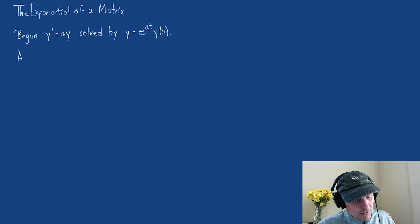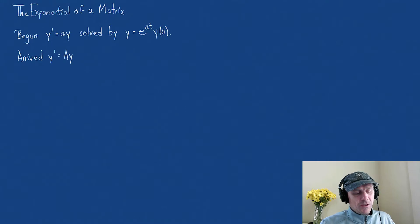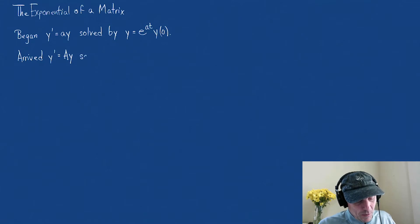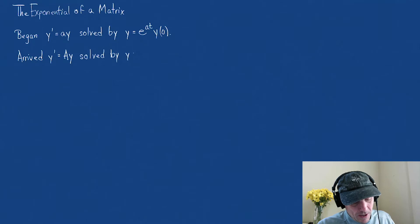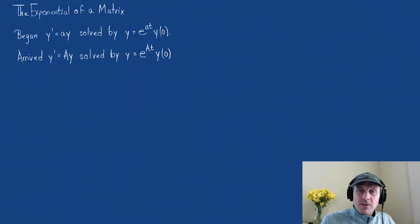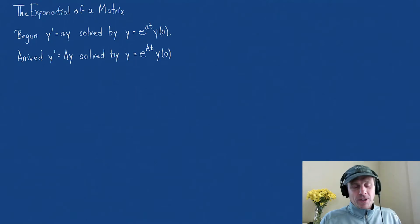Well, here's where we are now — where we have arrived. We have y prime equals A y, and now these y's are vectors. A is a matrix, and what we're going to look at today is that this is solved in the exact same format: y equals e to the A t times y of 0, where capital A is a matrix and y of 0 is a vector.